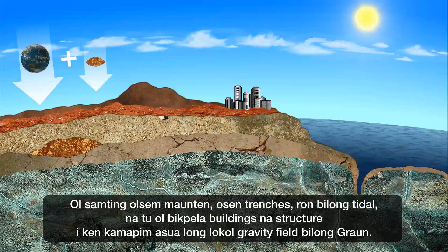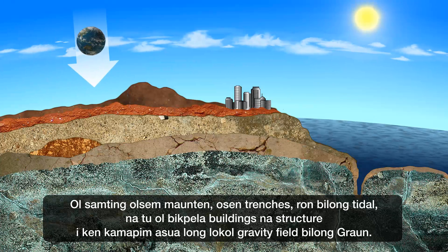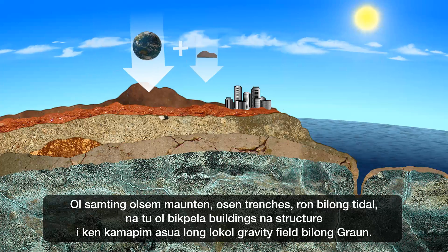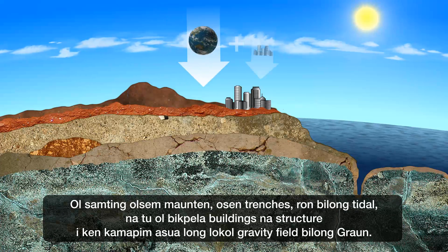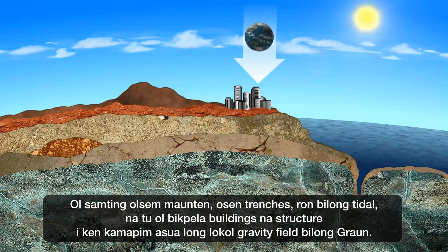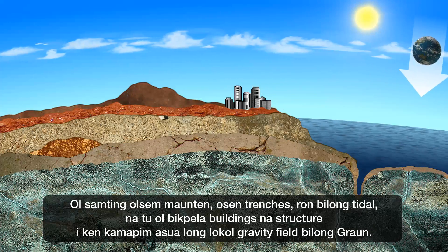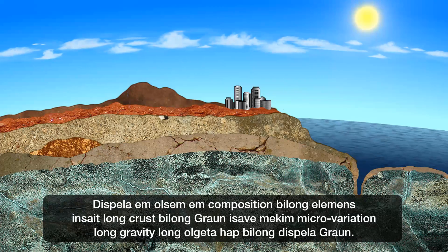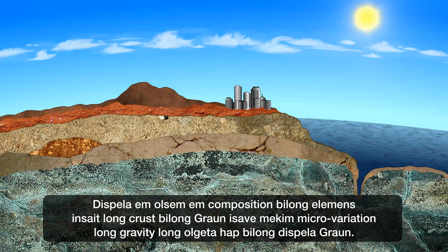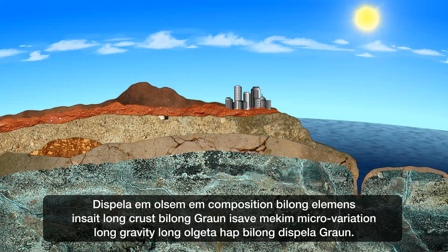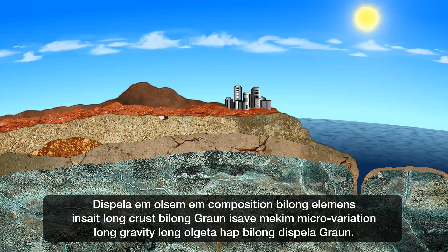Things like mountains, ocean trenches, tidal movements, even large buildings and structures can affect the Earth's local gravity field. These, as well as the composition of elements within the Earth's crust, all cause micro-variations in gravity all over the Earth.